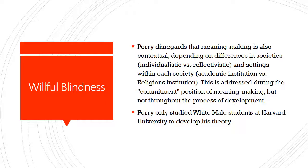Regarding willful blindness, Perry makes no mention of context while students are moving through the first three positions — dualism, multiplicity, and relativism. For example, a student's position could be different when they are in the classroom versus when they are in church. Additionally, on a global scale, meaning making could differ for students at an institution in a collectivistic region of the world versus an individualistic region. Although Perry acknowledged this downfall in his study, it was also willfully blind that only white men at Harvard University were studied to develop the theory, leaving students of different genders, races, backgrounds, and higher education institutes unacknowledged. The varying lived experience of students from different backgrounds has the potential to impact the flow of intellectual development.